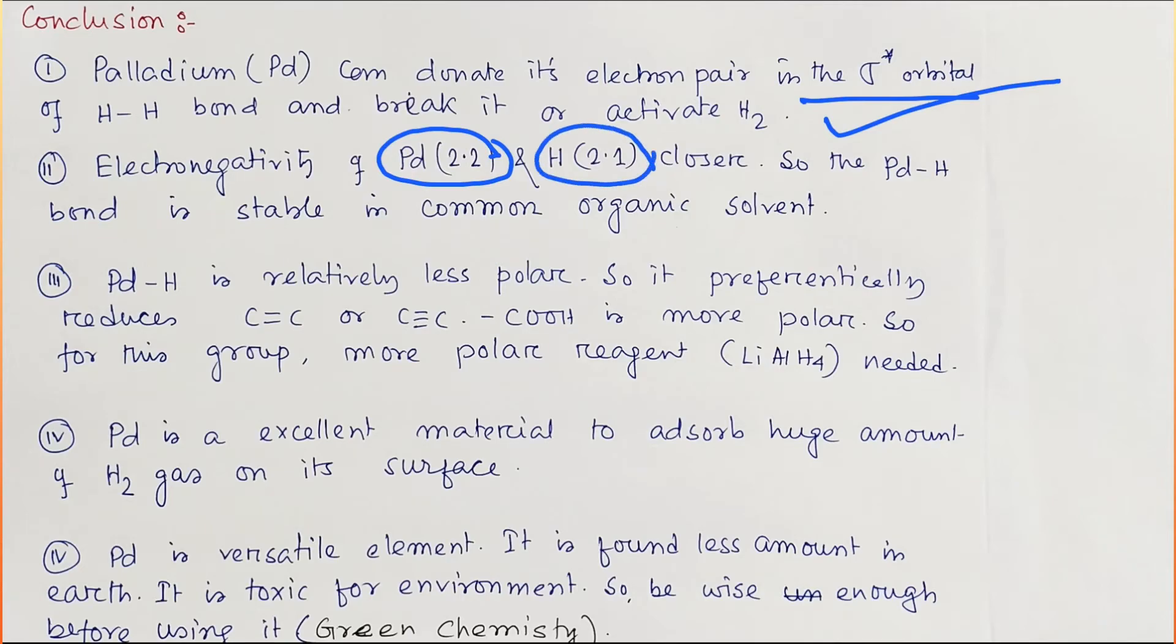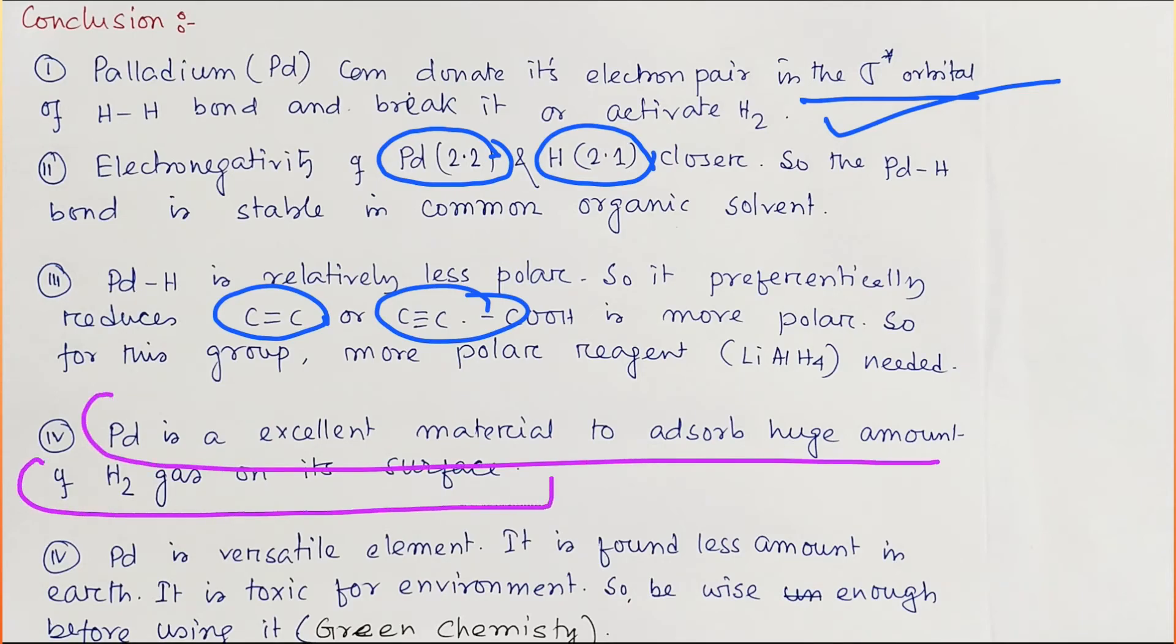What you have learned in conclusion: how palladium activates. I have explained, and this electronegativity value you can see—palladium having electronegativity 2.2, hydrogen is 2.1, so you may consider the electronegativity is almost closer together. Second thing, because of low polarity of this palladium-hydrogen bond, they are selective for carbon-carbon double bond and triple bond. And remember, palladium is a very excellent material for huge amount of hydrogen gas absorption on the surface.